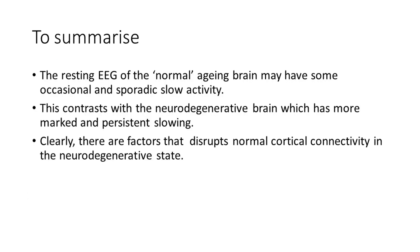In terms of our understanding of what's normal aging and the neurodegenerative state of the brain, the resting EEG of the normal aging brain may have some occasional sporadic slow wave activity, but this will contrast with the neurodegenerative brain - which we're going to go into more detail on in the next video - which shows more marked and more persistent slowing. There are clearly factors which disrupt normal cortical connectivity in the neurodegenerative state.